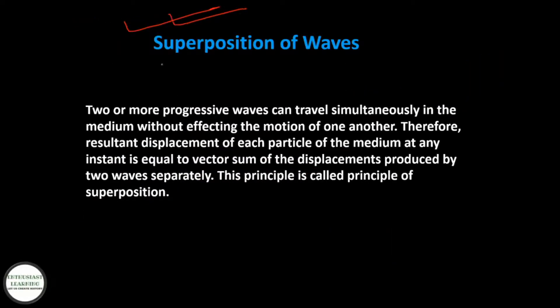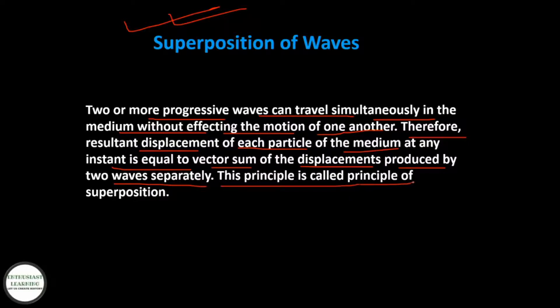Superposition of waves: two or more progressive waves can travel simultaneously in a medium without affecting the motion of one another. Therefore, the resultant displacement of each particle of the medium at any instant is equal to the vector sum of the displacements produced by the two waves separately. This principle is called the principle of superposition.